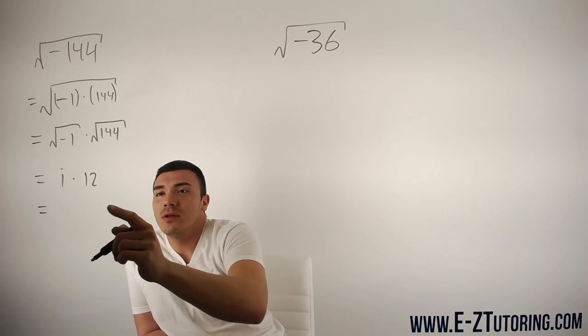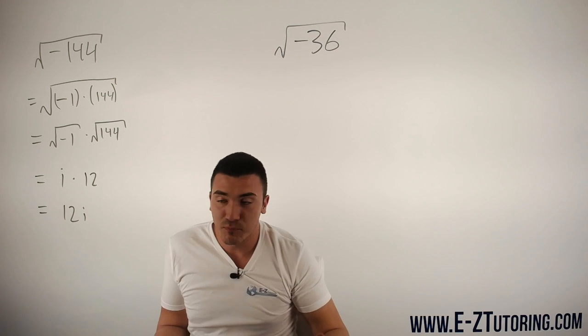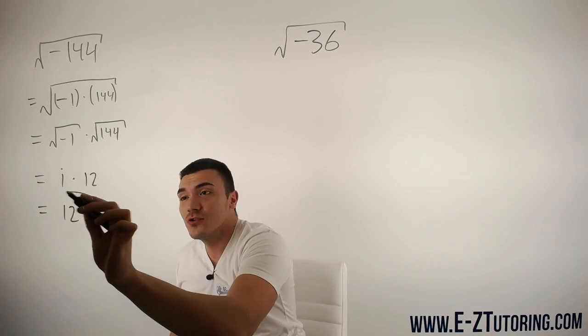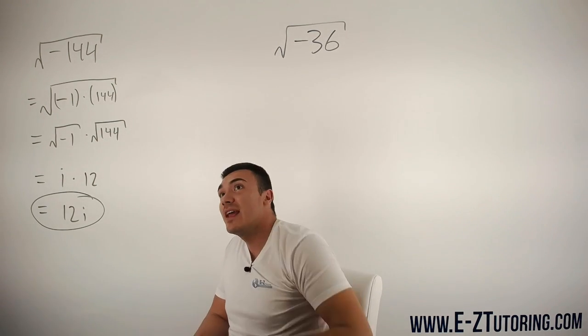You always want to put your number first and then the i - that's proper form in mathematics. So 12i is your answer to the square root of negative 144.